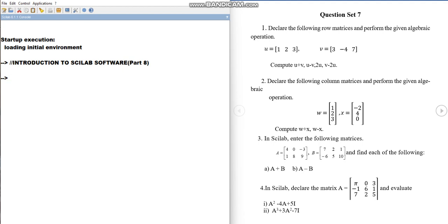So how we can declare a matrix? U equal to, we are going to use square bracket 1, 2, 3. So this way we can write or we can give commas also. So, v is equal to 3, minus 4 and 7. So this is done.